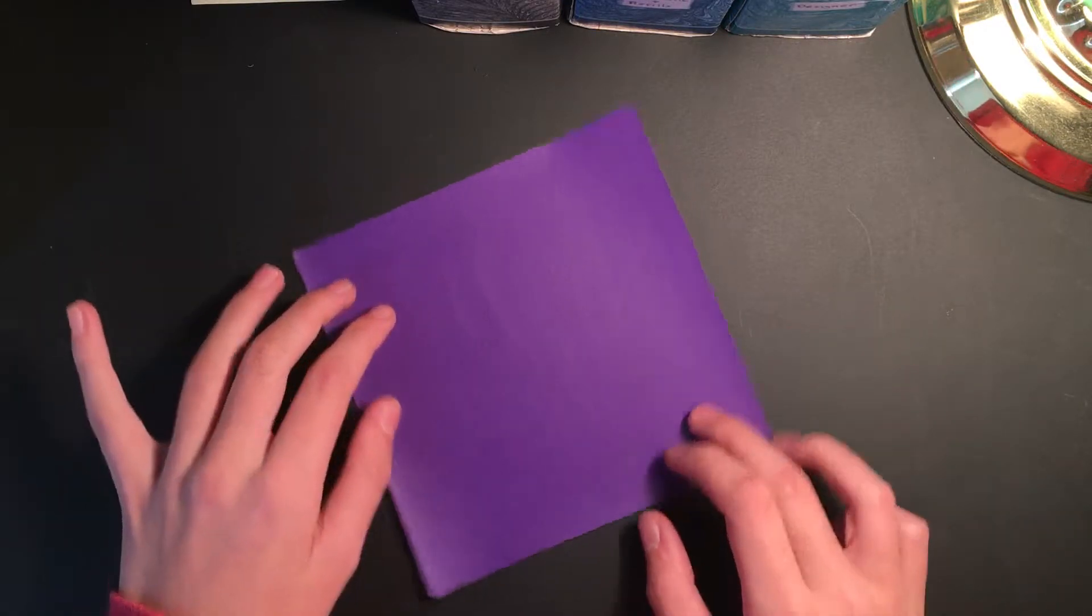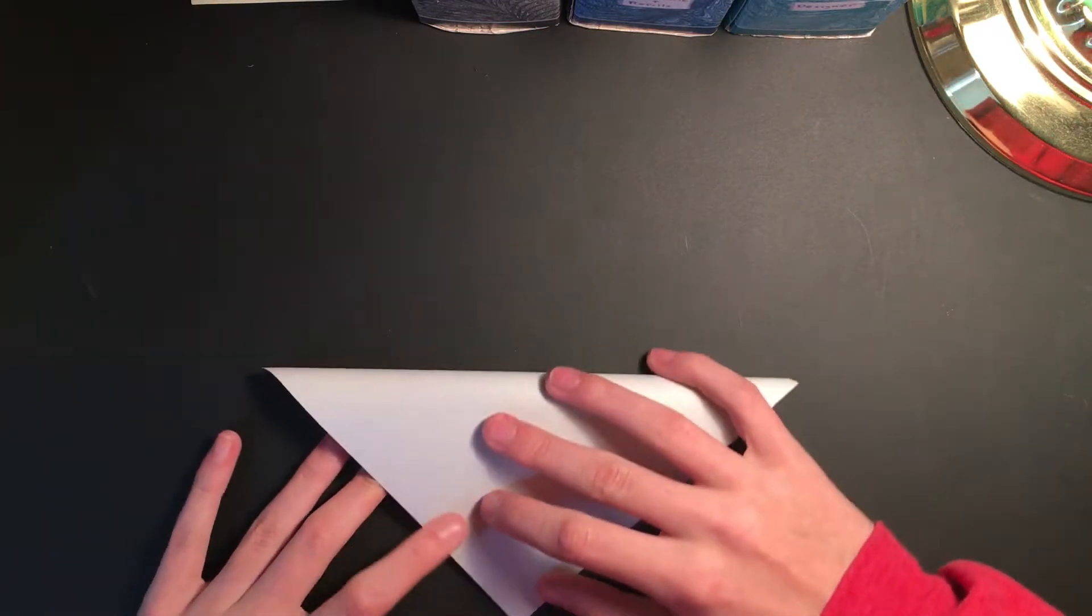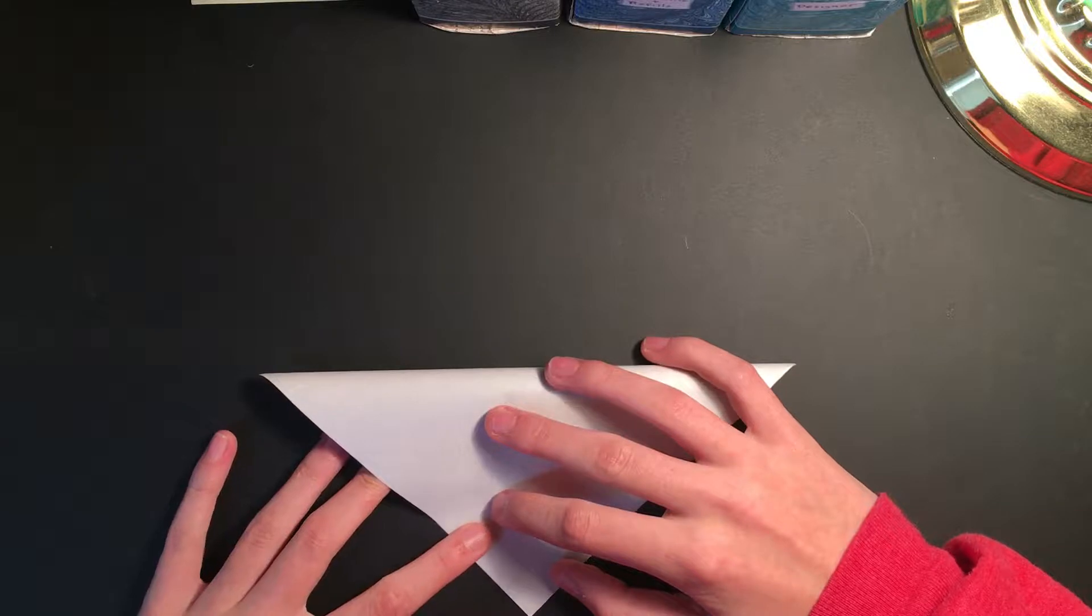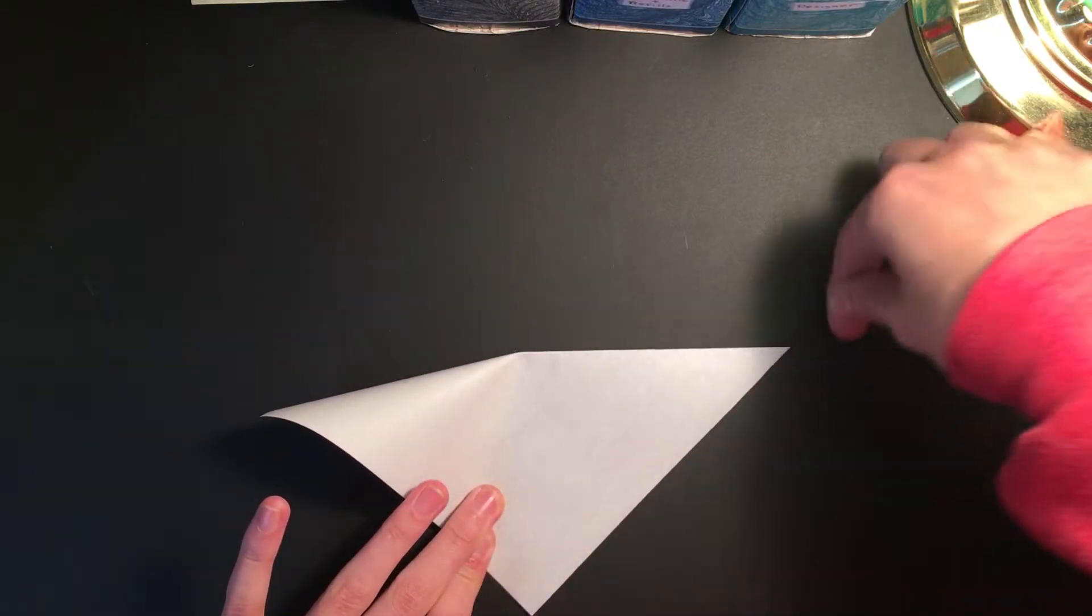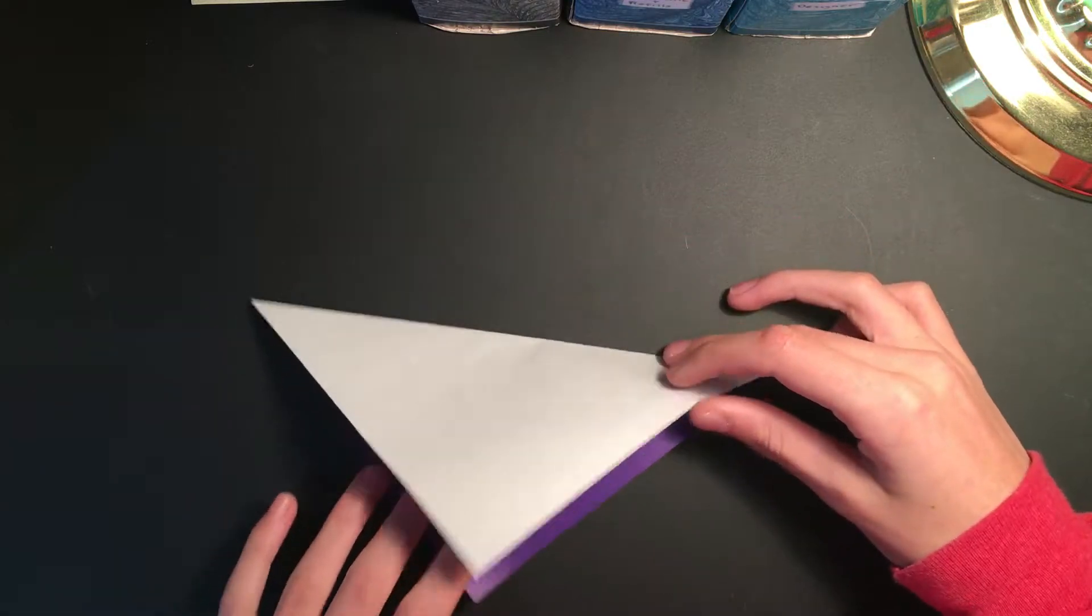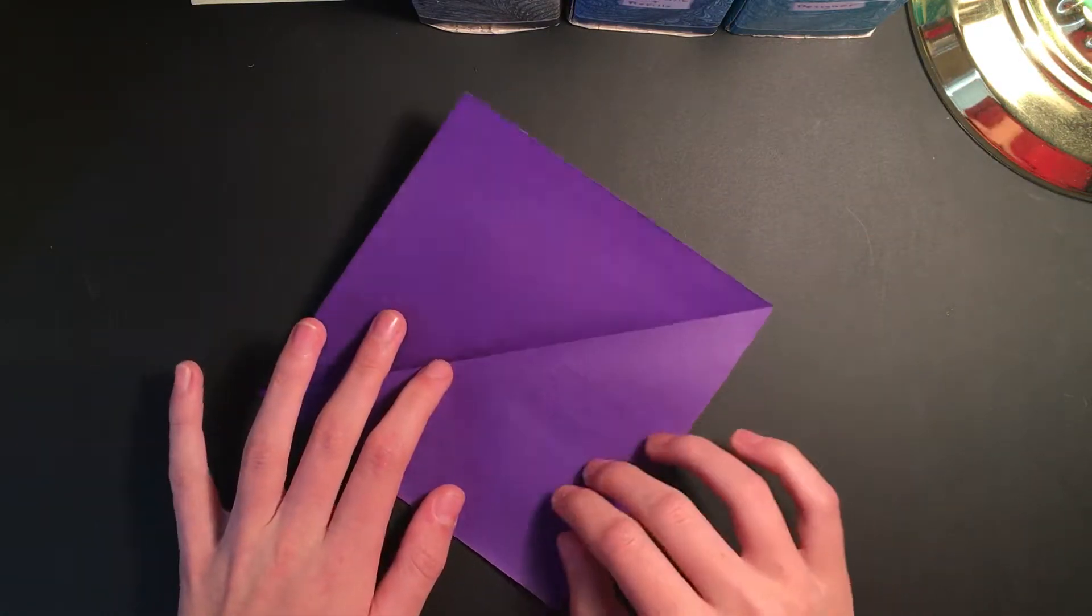We're going to fold the top point to the bottom point, line it up, crease and unfold. Now we're going to rotate ninety degrees and do the same thing, then unfold.